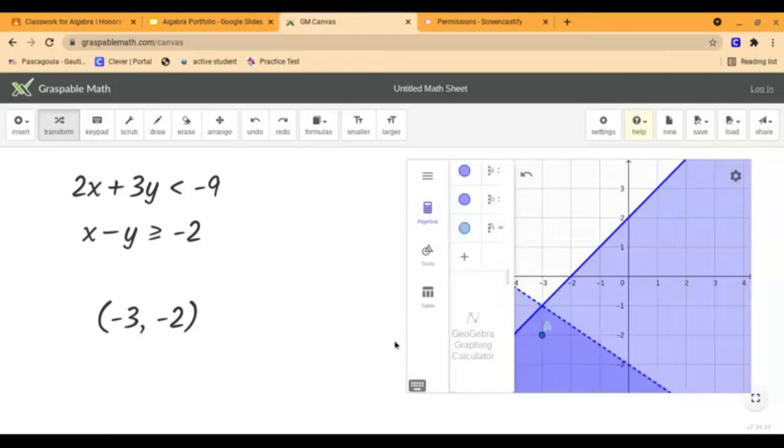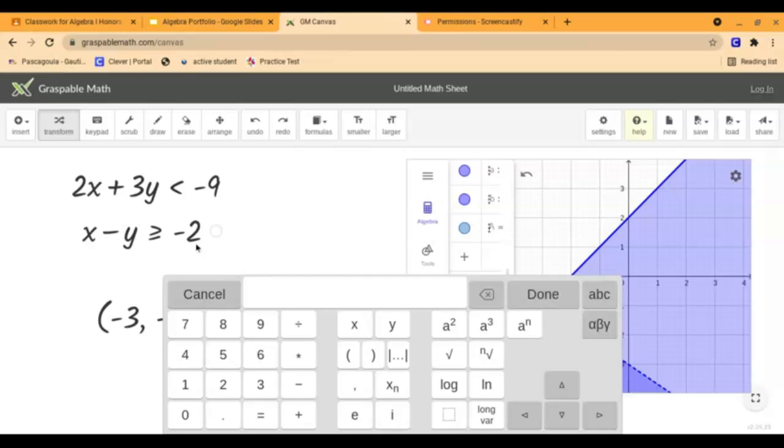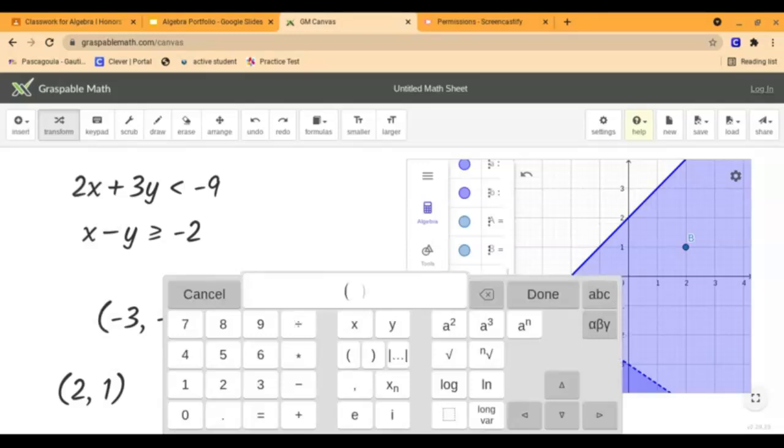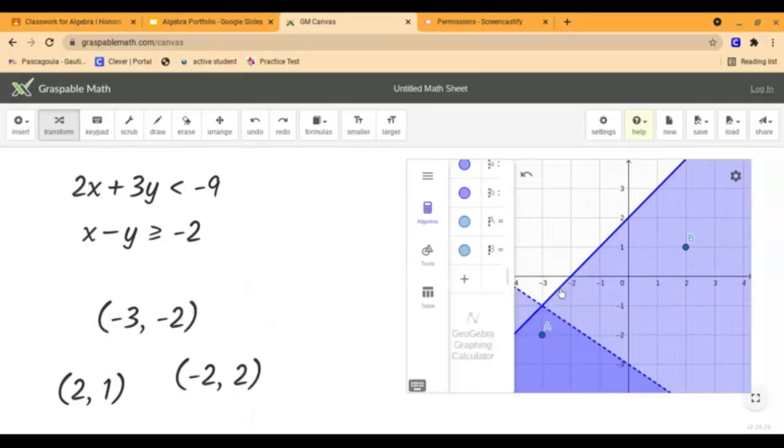So again our next point is going to have to be in this lighter shaded area so I think I'm going to choose to do 2, 1. So again we're going to come on over and do our math expression, we've got our 2, 1 and again just drag it on over and it will put it on there for us. So we've got our point A and our point B so now we're going to plot our point C and our point C is going to be over here in this white area where there's not really anything going on and so I think I'm going to do negative 2, 2.